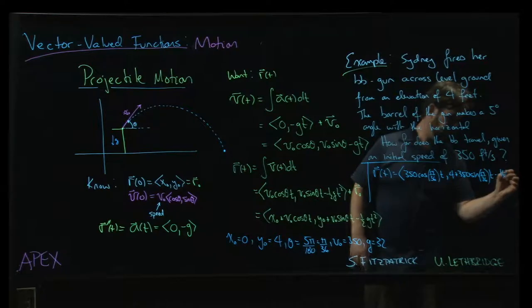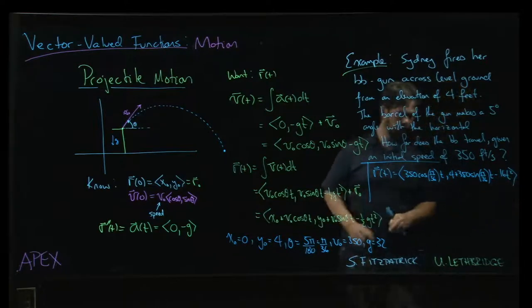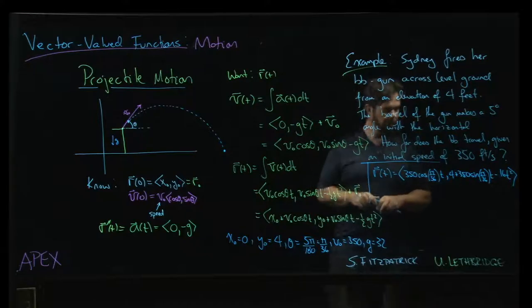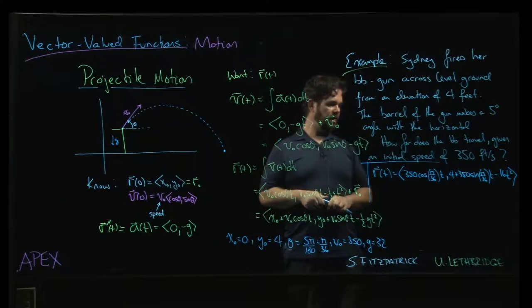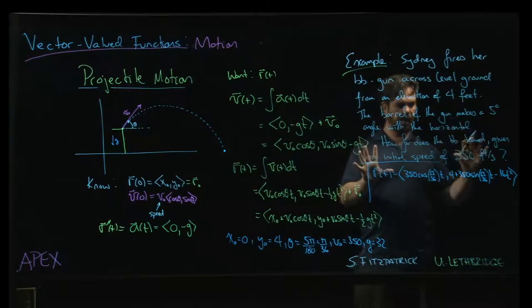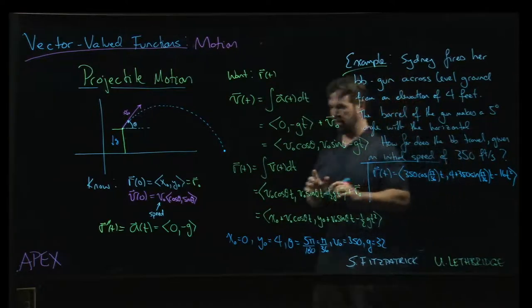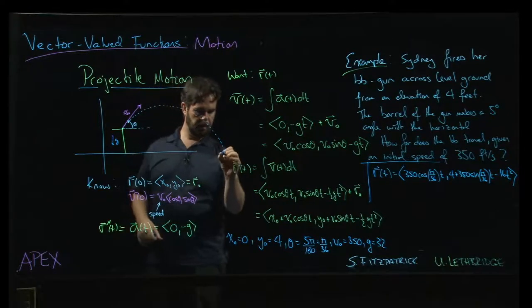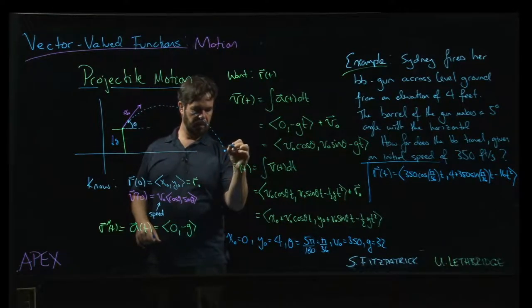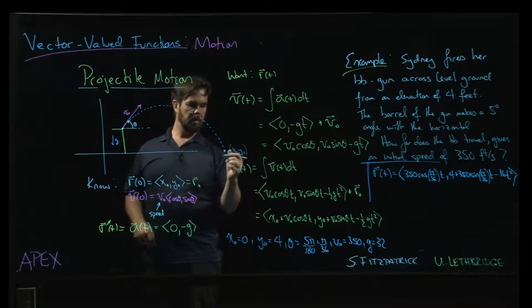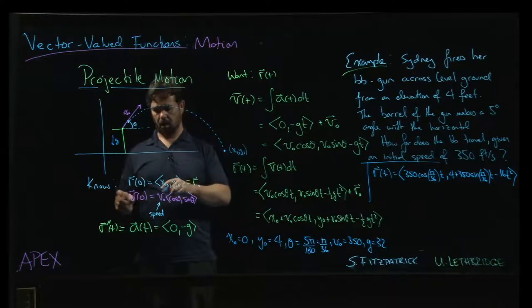minus 16t². So that's our position function. And we want to figure out how far the BB travels, right? So there's going to be some point here, say x₁ and y₁,